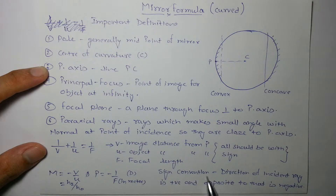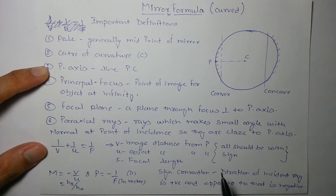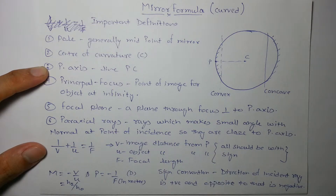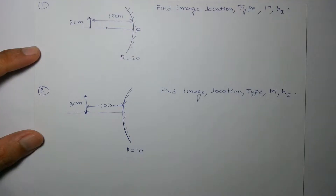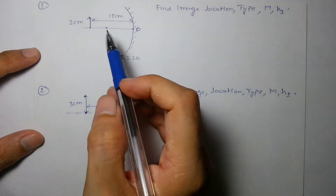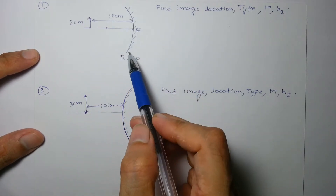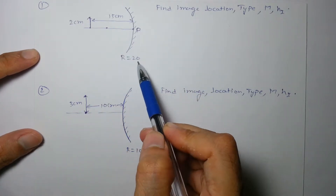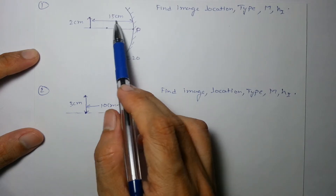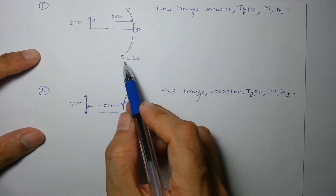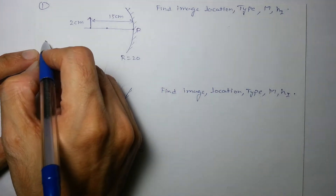Just remember the sign convention: direction of incident ray is positive, opposite is negative. All distances are measured from the pole. Now let's jump to a few problems. First problem: a 2 cm object is placed 15 cm in front of a concave mirror with radius 20 cm.